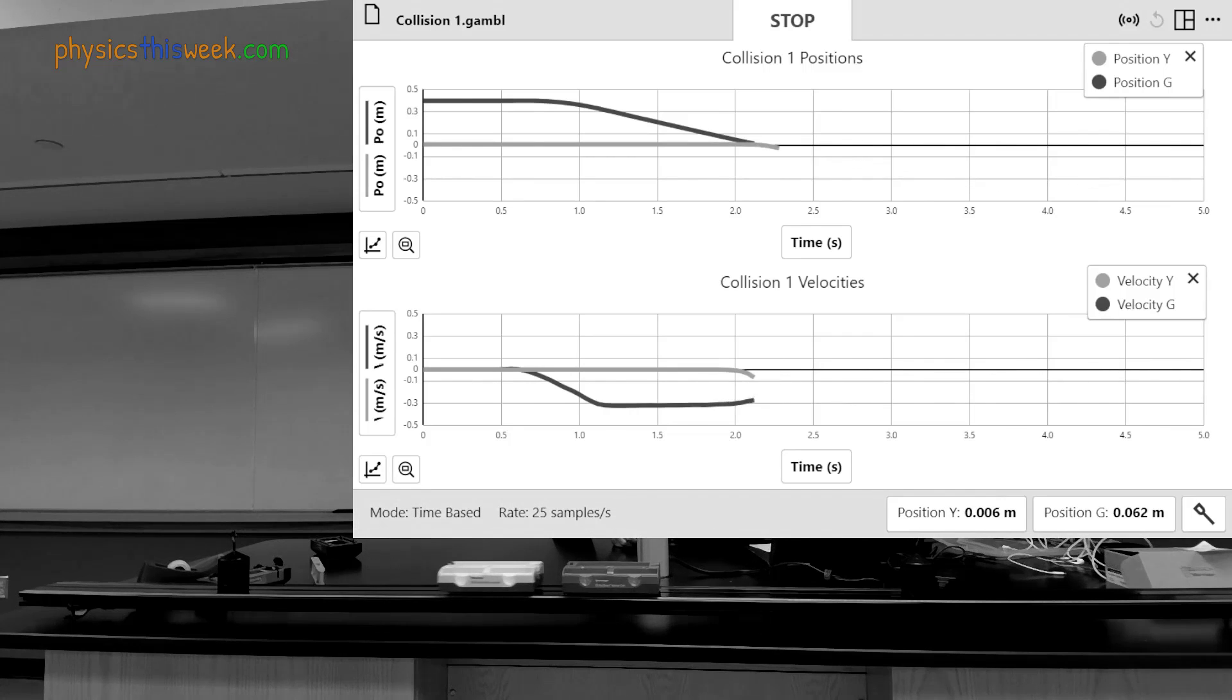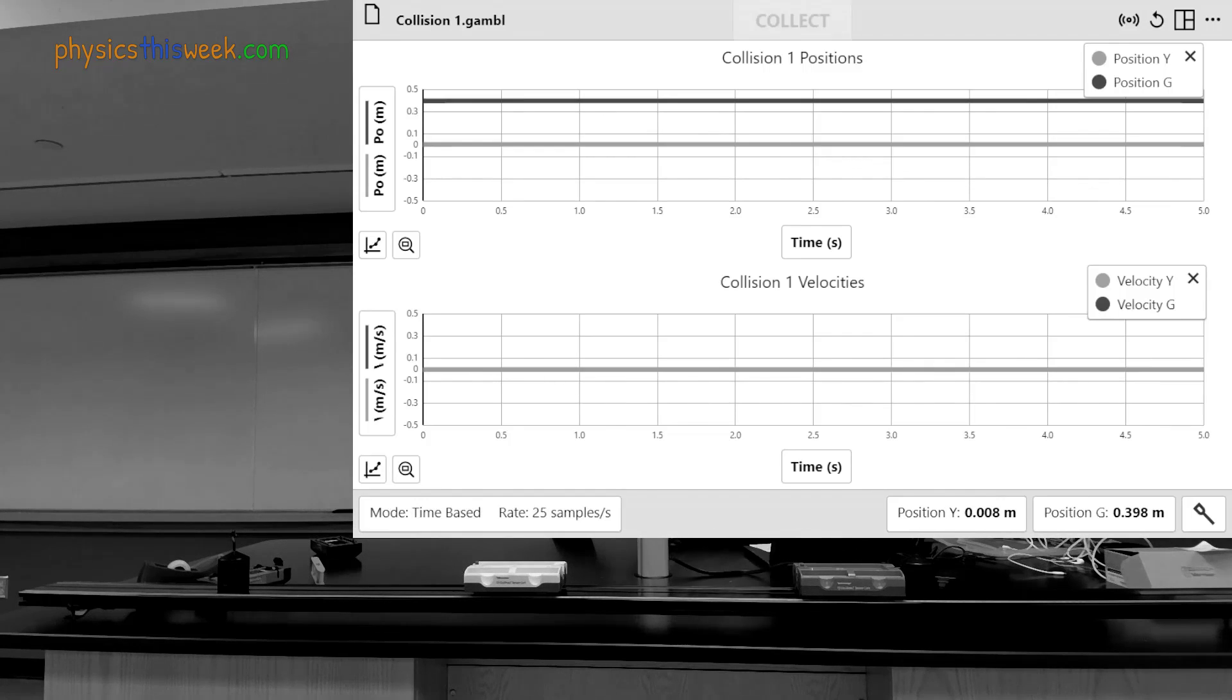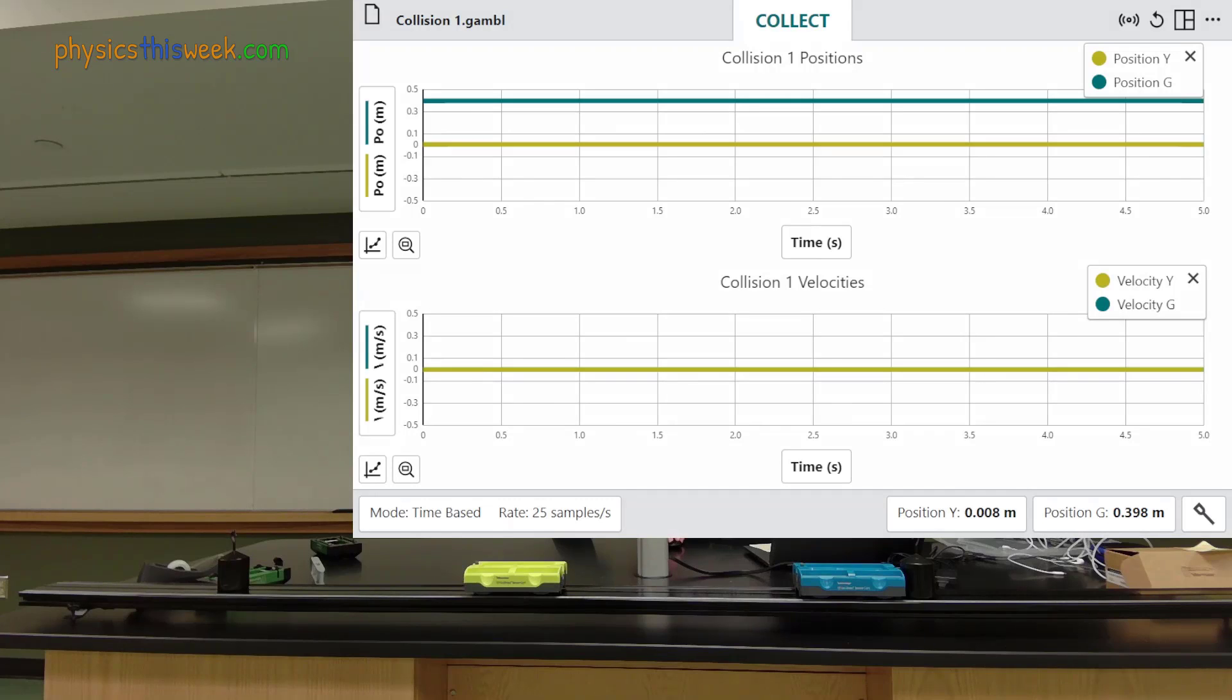Each trial begins with the two carts set up on the track facing each other. They have been calibrated so that when they are against the 1 kilogram masses they are approximately 40 centimeters from the center of the track. This is done so that the collision takes place near the center of the track.